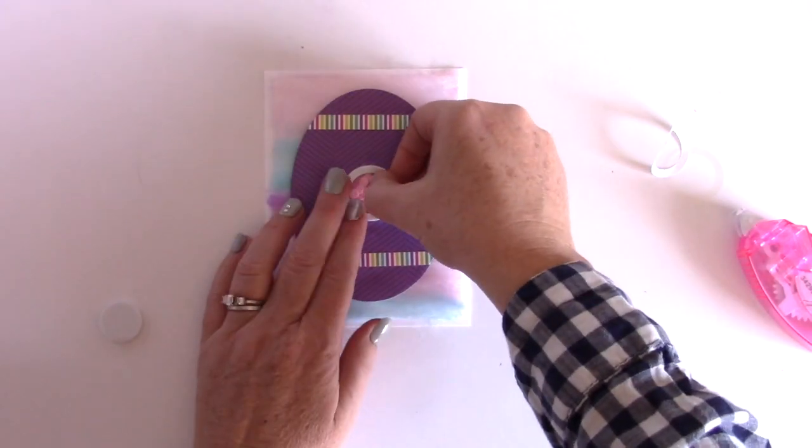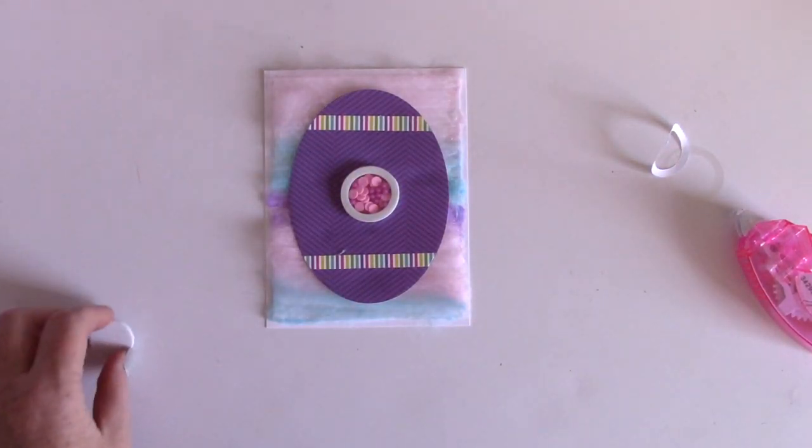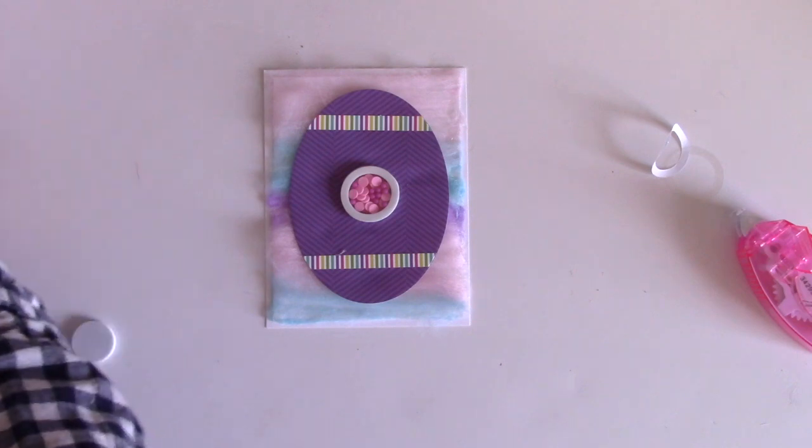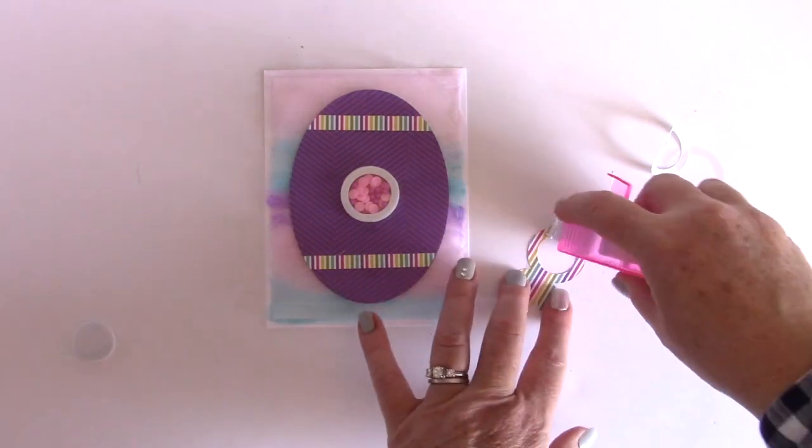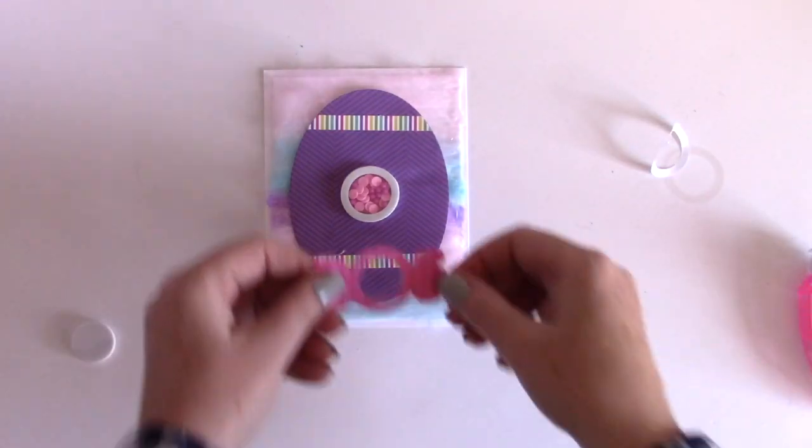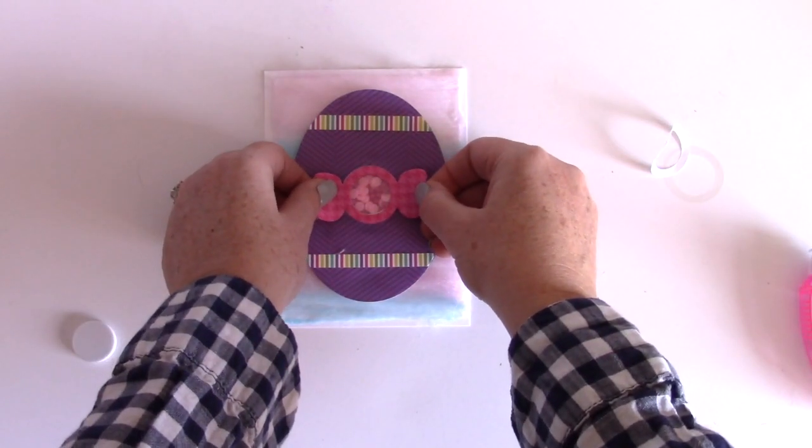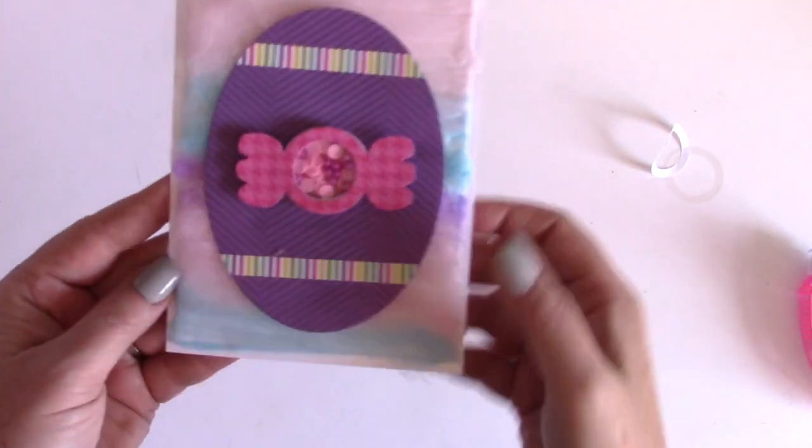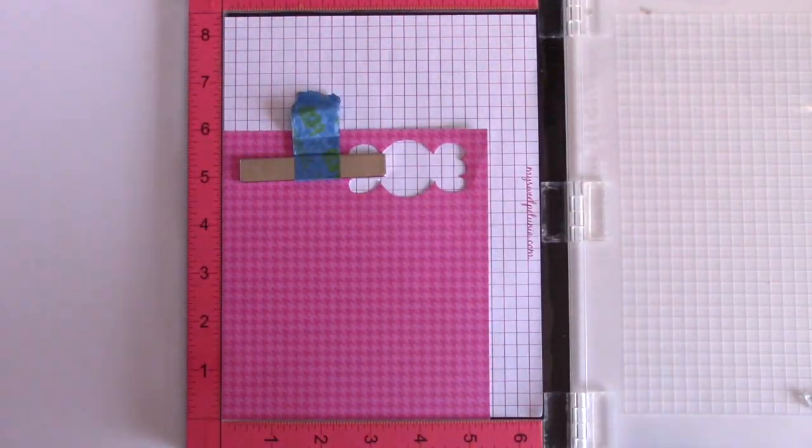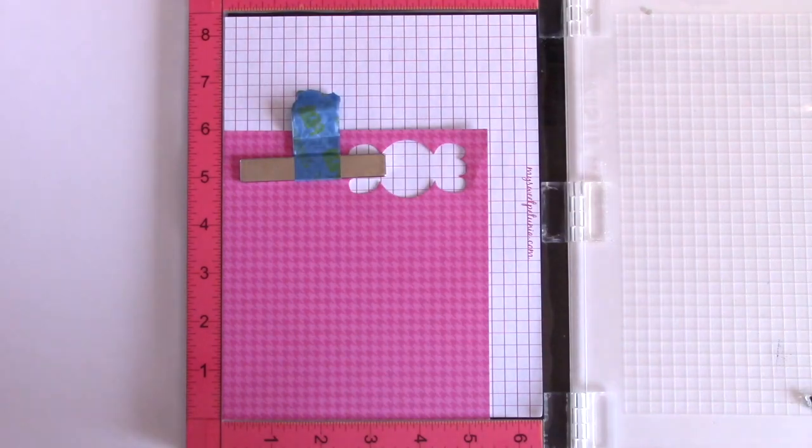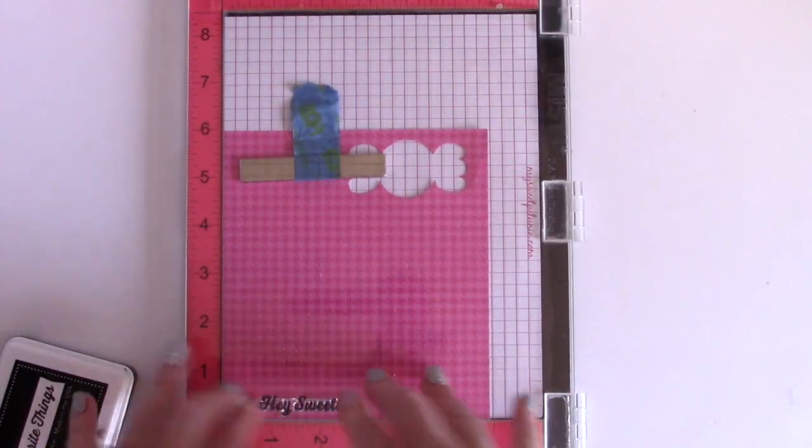I peel off the top protective layer of the foam and put my acetate down. All of these are included in the Candyland kit. Everything is die cut for you as far as the acetate and the foam. Next I'm gonna put a little memory runner XL, which is tape runner, just on this circular part and that completes my shaker once I adhere that down to the acetate.